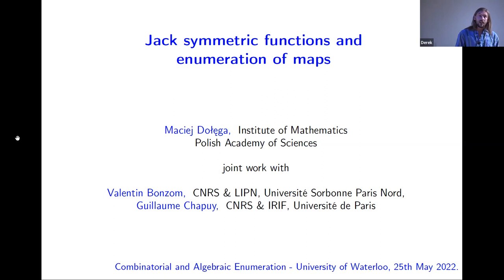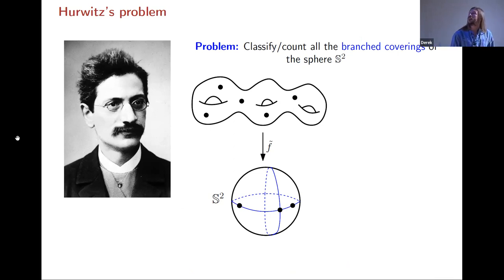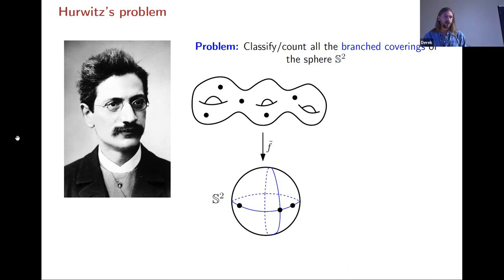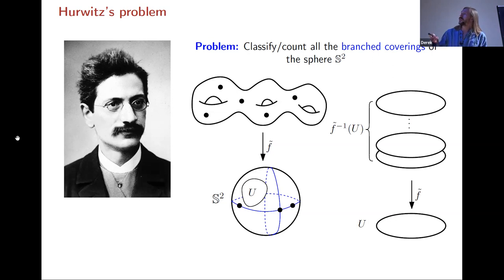It connects geometry, enumeration of maps, and symmetric functions. Let me start from a problem posed more than 100 years ago by Hurwitz. Hurwitz was interested in a certain geometric problem: he wanted to count or classify branched coverings of the sphere. Yesterday Jonathan Novak mentioned this and said it's a bit scary — I would like to try to convince you that it's actually not that scary.